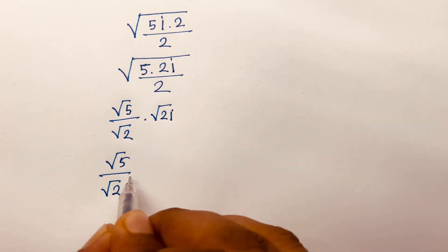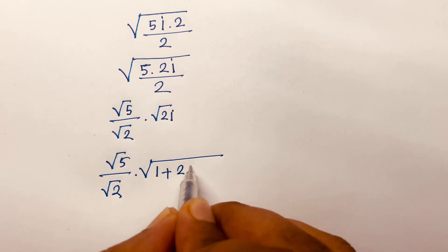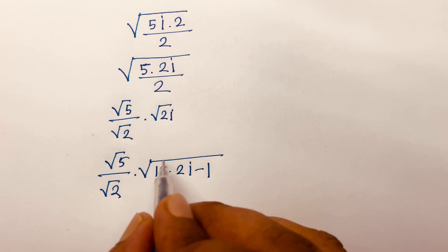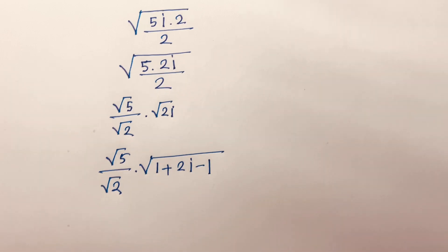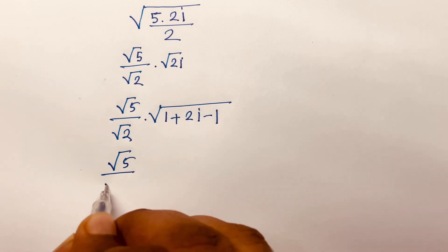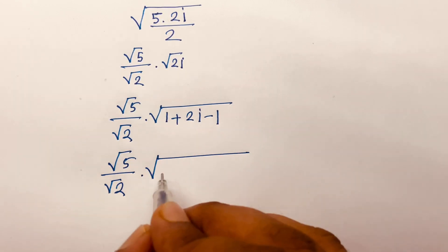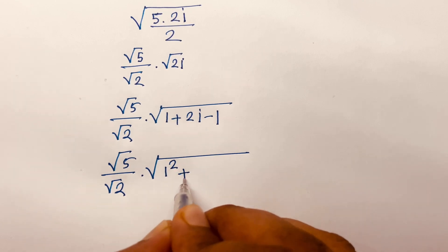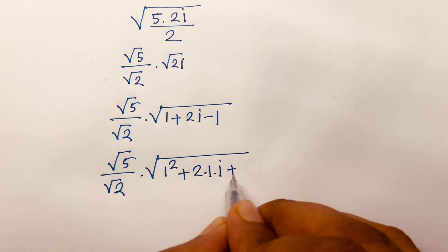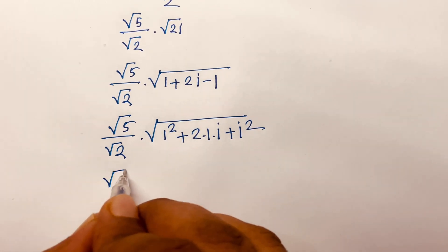Then I rewrite it as square root of 5 over square root 2 times square root of (1 + 2i − 1). Note that 1 − 1 = 0, so this equals square root of 2i. Then it becomes square root of 5 over square root 2 times square root of (1² + 2·1·i + i²).